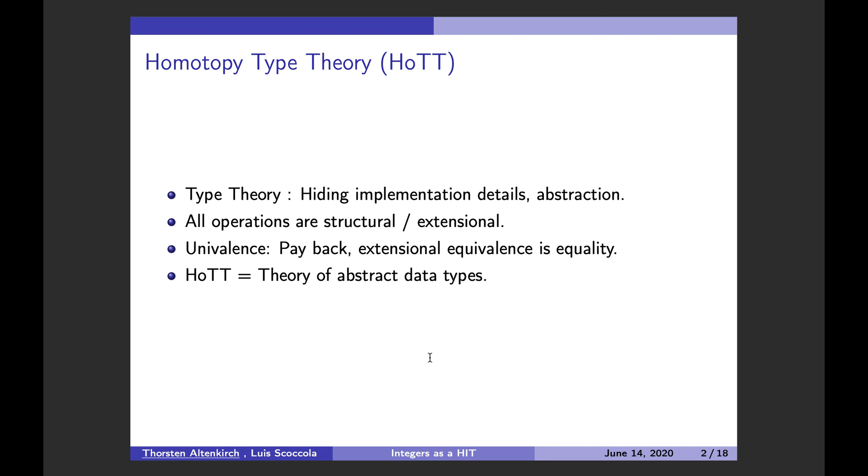So one important aspect of type theory is that we hide implementation details. And by doing this, we enable abstraction. Type theory is different to set theory in that all operations are structural, or you could say extensional. So in type theory I cannot talk about the elements in isolation that I can do in set theory. And hence I cannot really distinguish different implementations of the same concept. For example, in set theory I can distinguish different implementations of the natural numbers. In type theory I can't.